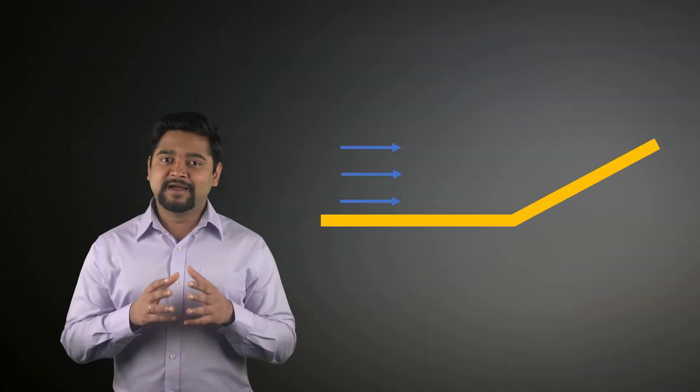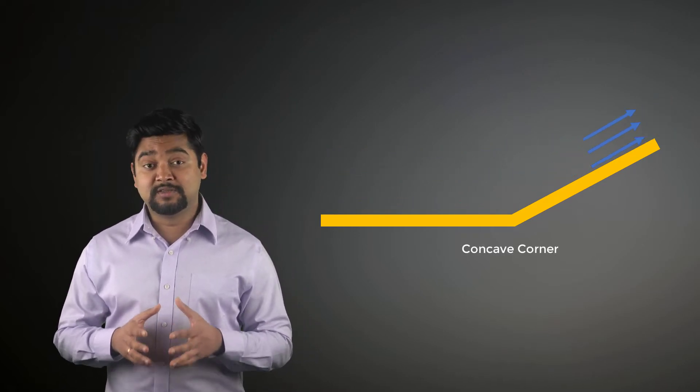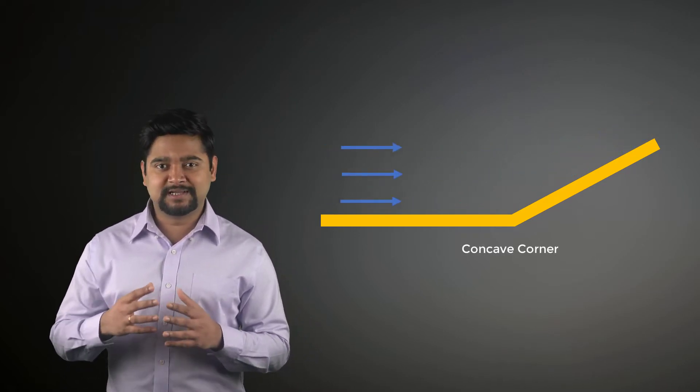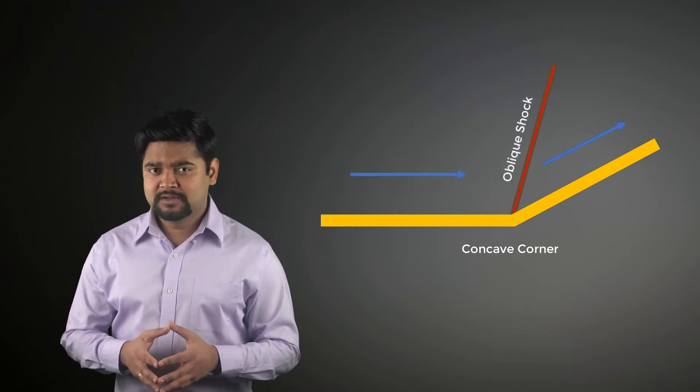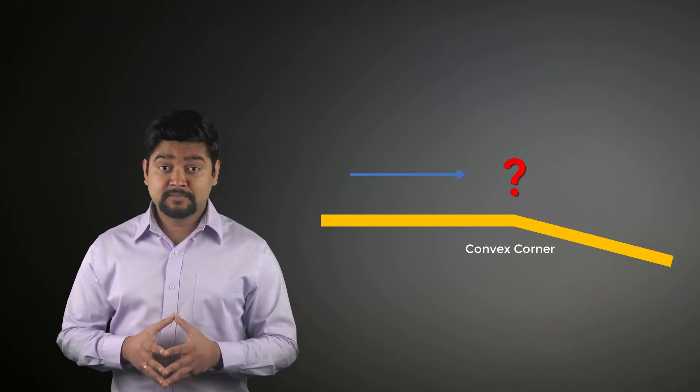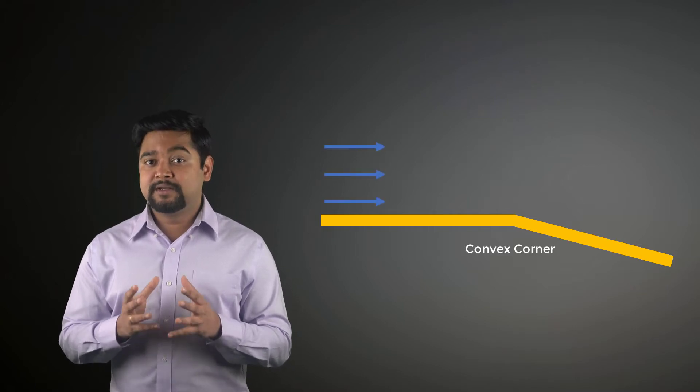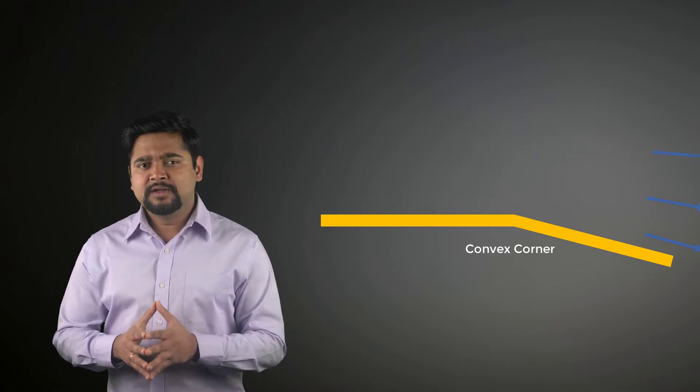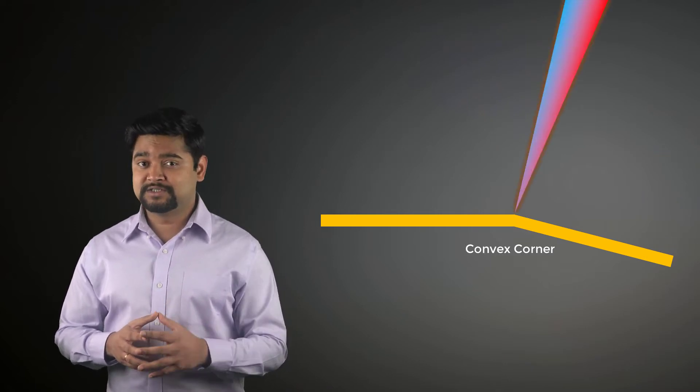When a supersonic flow encounters a concave corner, we know that this causes the flow to turn into itself. This leads to the formation of an oblique shock. But what if the flow encountered a convex corner? In this case, the supersonic flow would effectively be turning away from itself. This interaction leads to the formation of expansion waves.